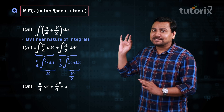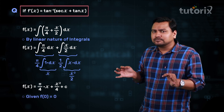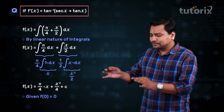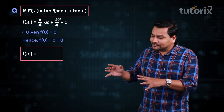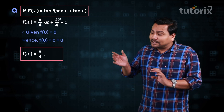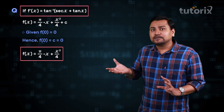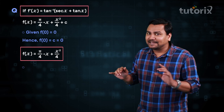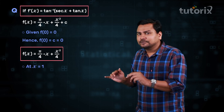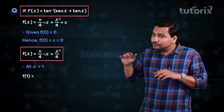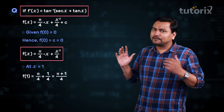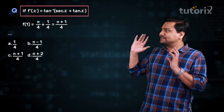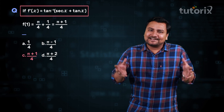To calculate the value of c, we use the given information that f(0) equals 0. Applying that gives c equal to 0. So our f(x) equals π/4 times x plus x²/4. Now putting x equal to 1, f(1) equals π/4 plus 1/4, that is (π plus 1) by 4. And that is option C, so option C is the right answer.